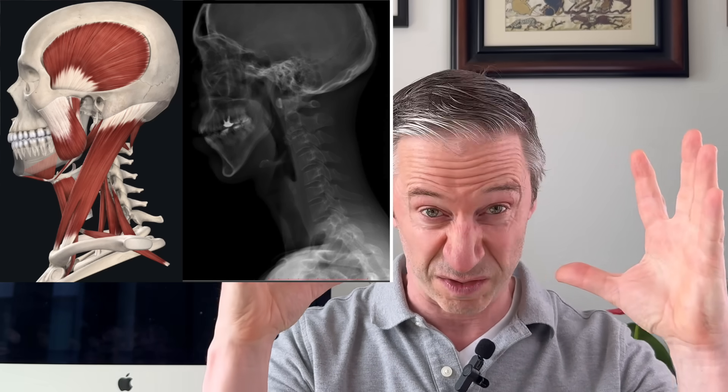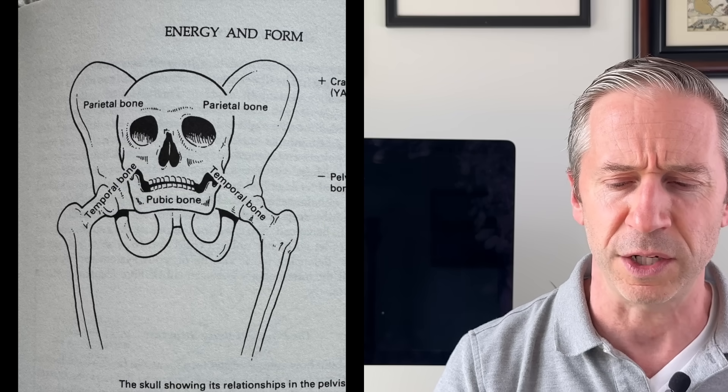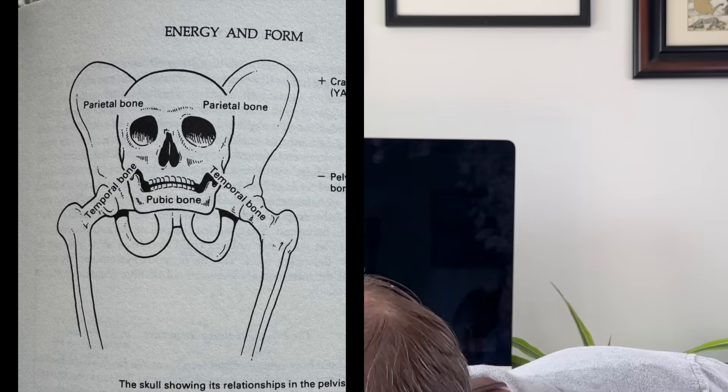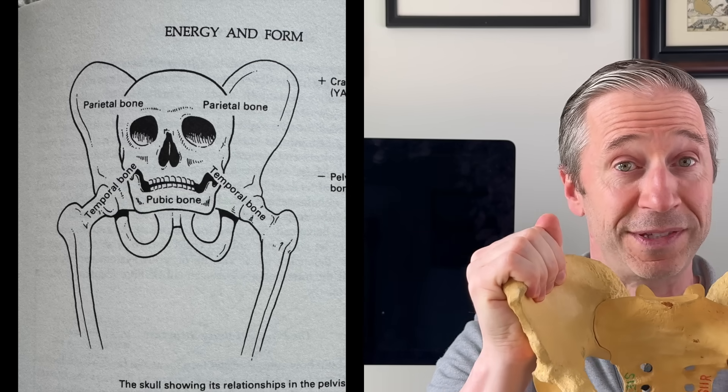That can start to tighten your cranial bones, because the bones in the cranium have a little bit of movement to them. When the muscles tighten at the jaw, they can restrict those cranial bones — particularly the temporal bones. And that creates a lot of problems because the temporal bones have an obvious relationship to the pelvic bones. The temporal bones and ileums are the same — they do the same things.